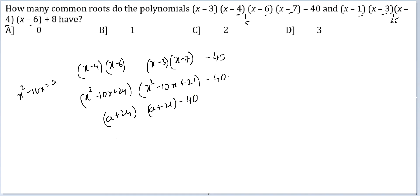Let's open up the bracket. We get a square plus 45a plus 24 into 21. 24 into 21 is 504. 504 minus 40 is 464. Okay.